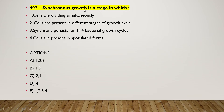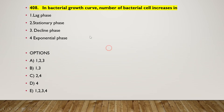Next question: synchronous growth is — (1) a stage in which cells are dividing simultaneously, (2) cells are present in different stages of growth cycle, (3) synchrony persists for one to four bacterial growth cycles, (4) cells are present in sporulated form. The right answer is option B — option one and option three is the correct answer.